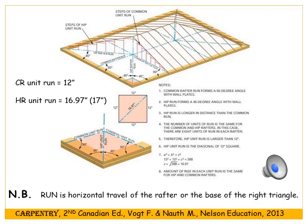At the end of each ridge board there's going to be a common rafter that's exactly the same as the one on the side of the building. At the end of the building there'll be a common rafter and at the side of the building will be a common rafter, and they will come up and meet at the ridge board. In between them there will be a hip rafter.